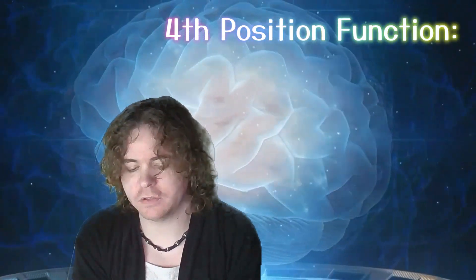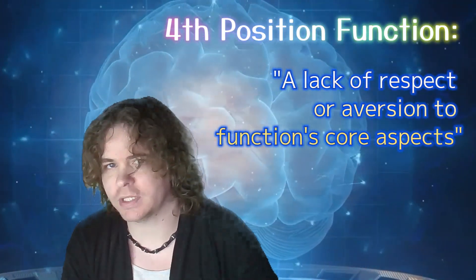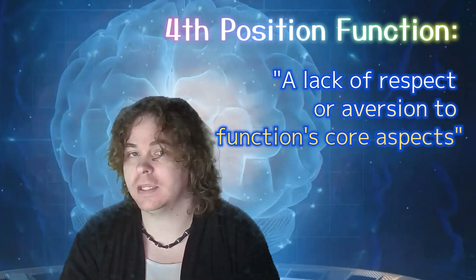Now it's time for the fourth position functions, which should be how most people can identify who's who. The fourth position function shows a disdain for that particular trait, most notable in the early years. I'd say 25 and younger.